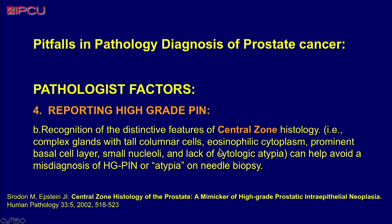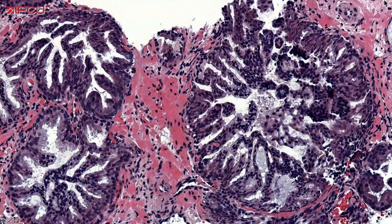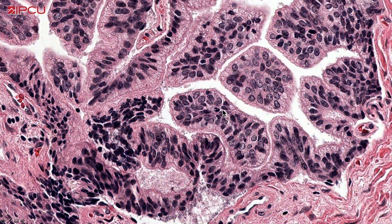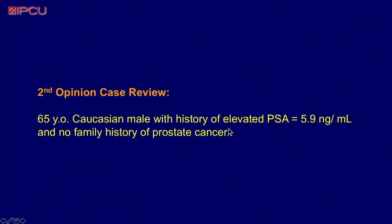Then there is over-calling, which is a very common source of discrepancy. It can confuse some pathology colleagues. The central zone is normally a very complex gland — with glands within glands and high-grade PIN-like appearance. This is normal. When the biopsy has reached an unusual area of the prostate, we need to be careful not to over-call it as high-grade PIN.